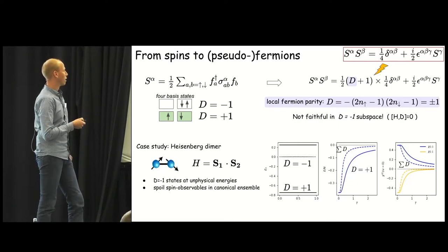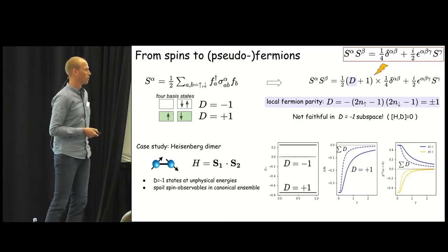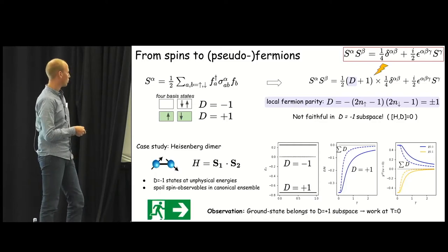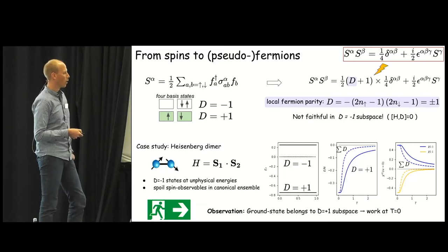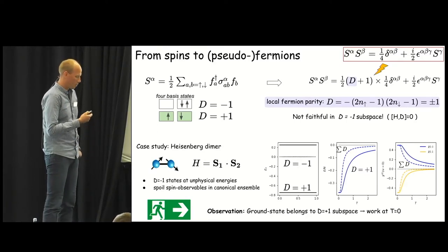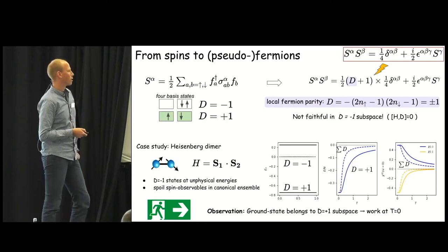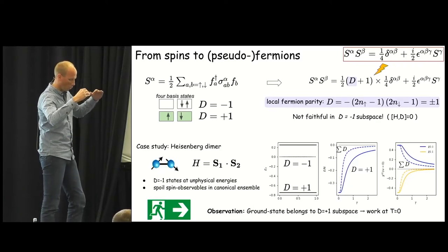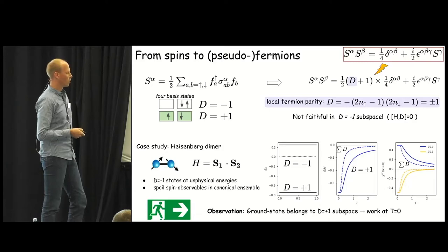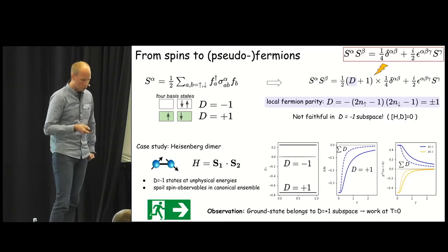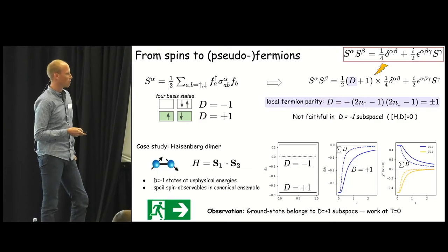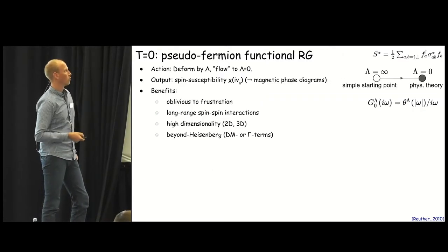This spin representation fails to reproduce finite temperature observables if you treat it in the canonical ensemble. There is just one way out and that is based on the observation that the ground state sits in the D equal plus one subspace. You can understand this is also the case for more generic spin systems because the D equal plus one subspace cannot benefit from lowering the energy in the Hamiltonian since the spin operator takes on the value of zero there. So for generic spin systems, as long as we work at zero temperature, we can assume the ground state is in the D equal plus one subspace and we can continue with our fermionic spin representation.